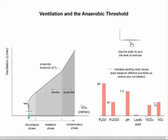If you look over here at these values, you're looking at the oxygen pressure, carbon dioxide pressure, pH of the blood, lactic acid levels, carbon dioxide, and oxygen volume. Each of these are right now at resting rate. So right now at rest, the pH is at 7.4, and the lactic acid is pretty much non-existent.